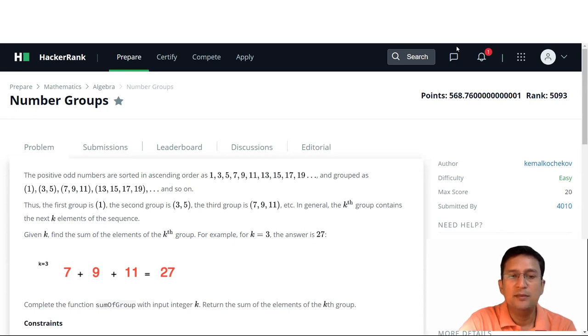So the first group is one, the second group is three and five, and the third group is seven, nine, eleven. Given K, find the sum of the elements of the K-th group.